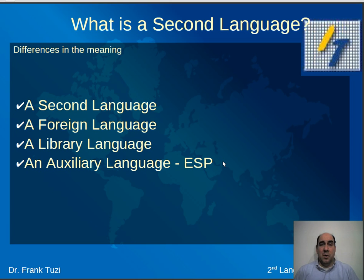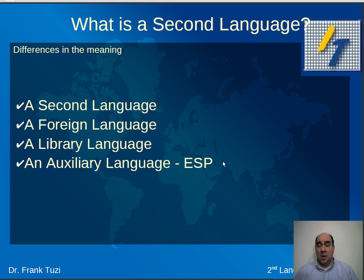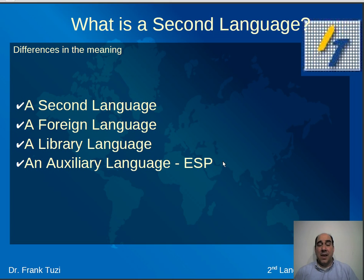Most of your college students studying a language are studying a foreign language. Even though they may be studying Spanish, French, German, or whatever, in their own world they're not planning on using that language anywhere else. There are some that do — for example, someone who decides to go live in Spain for ten years will be learning a second language in that case, not a foreign language. There are other people who use a library language — basically, they need to do investigations and research, so they study another language in order to investigate in that language.